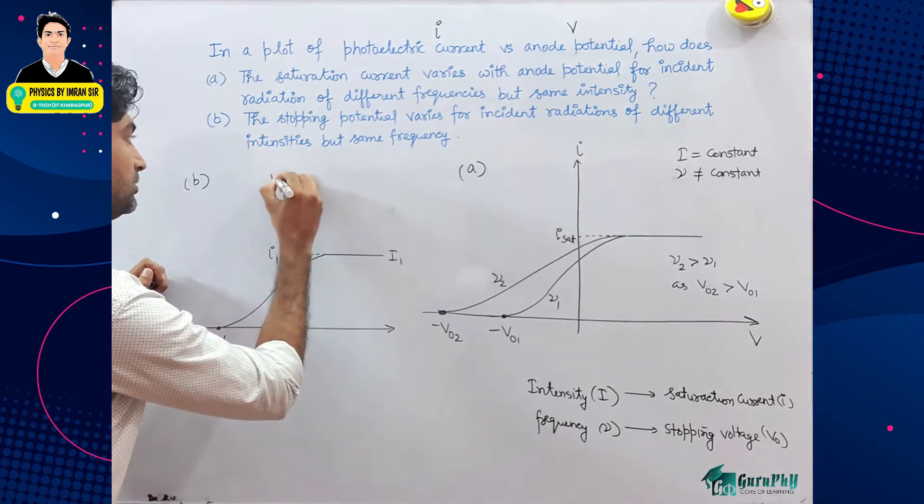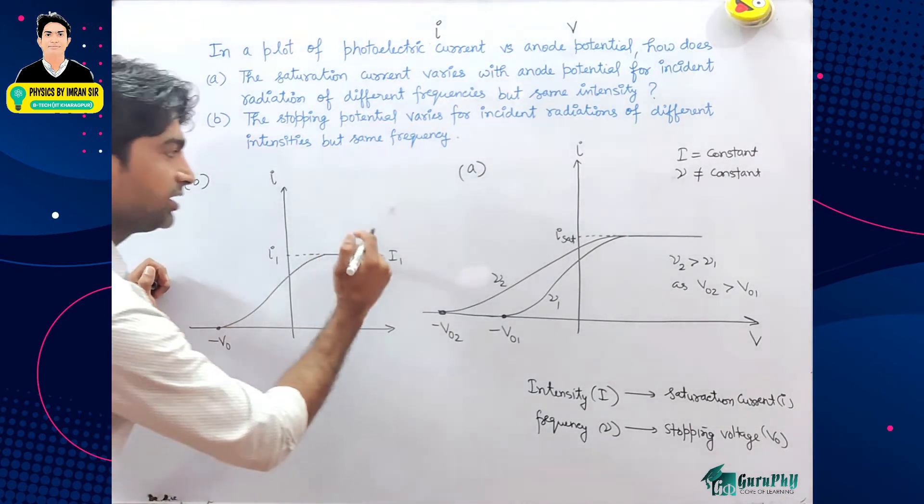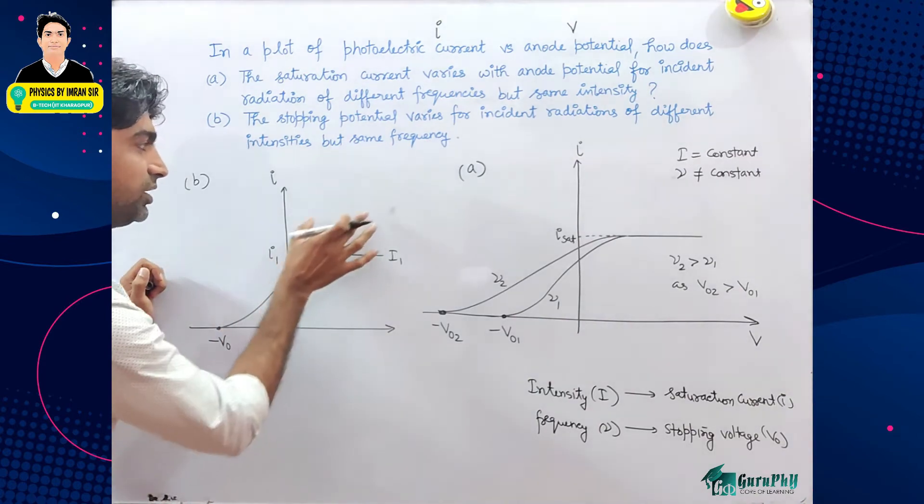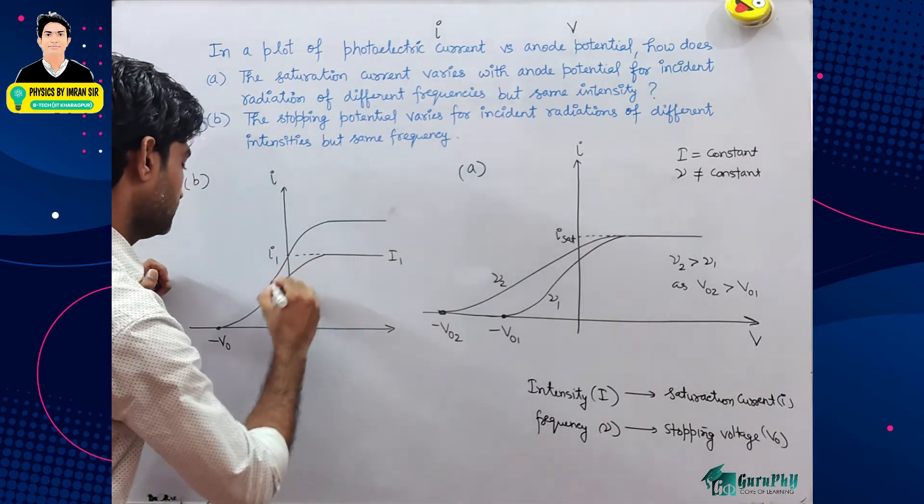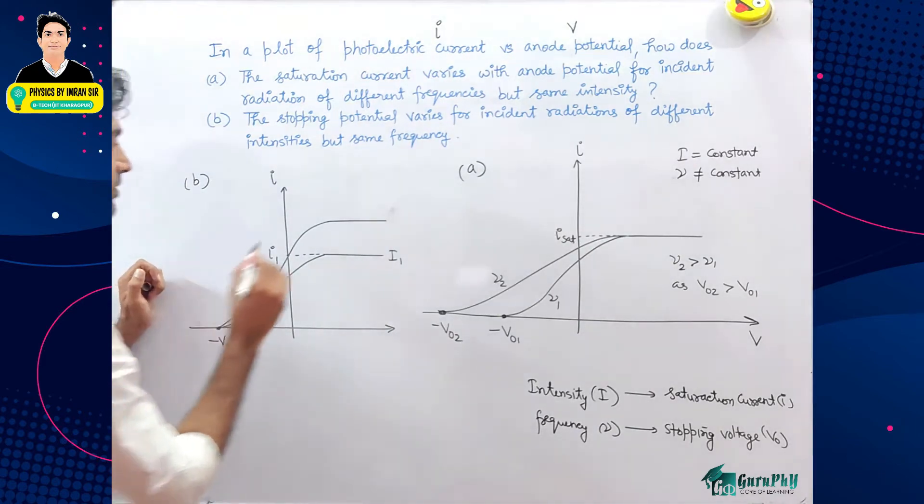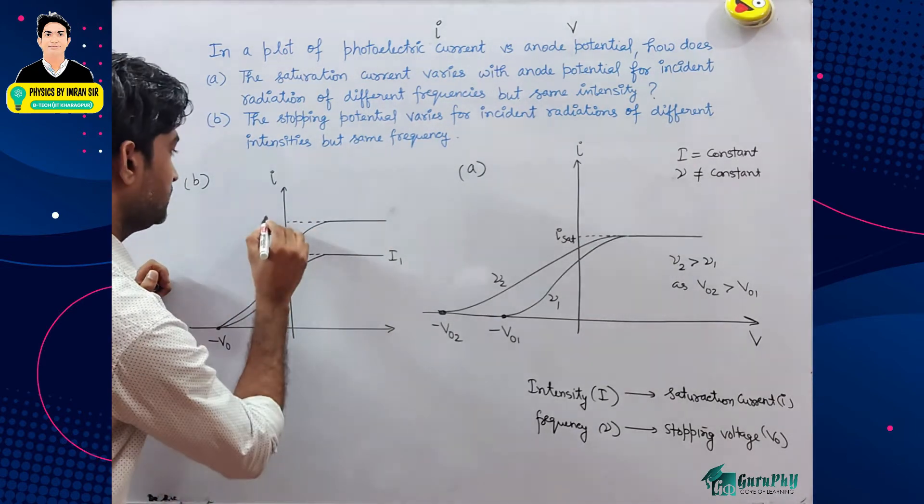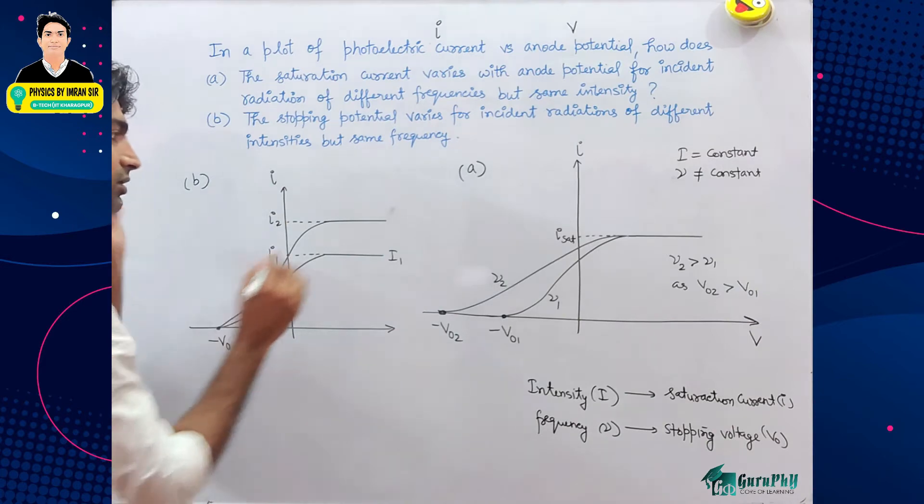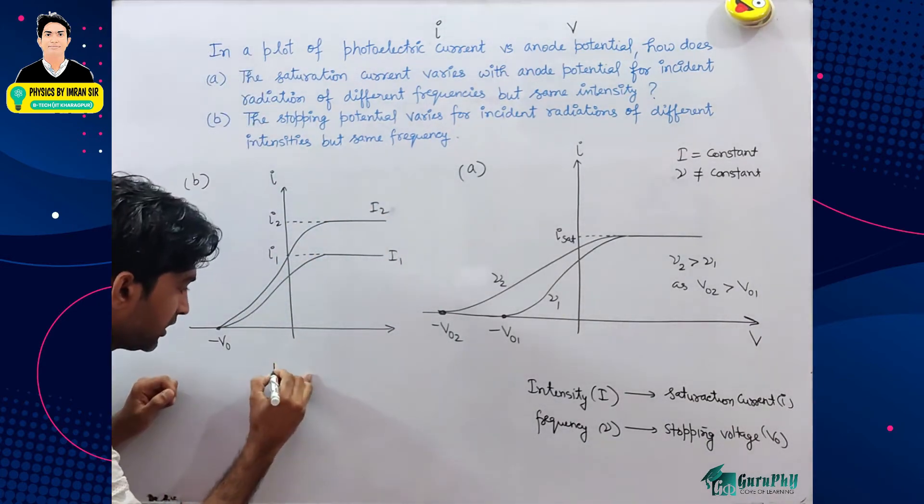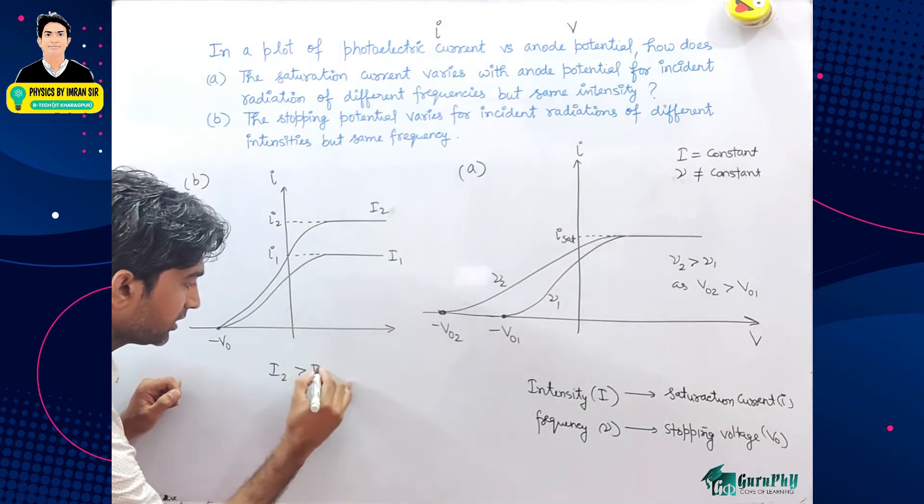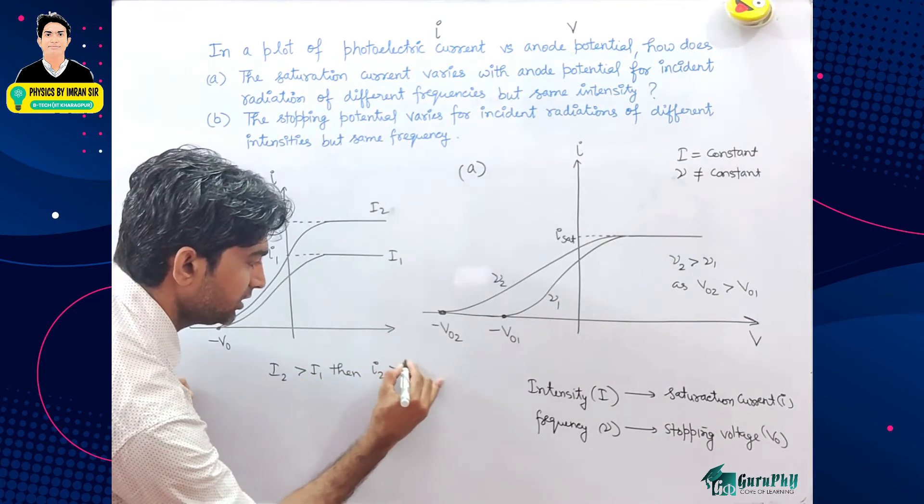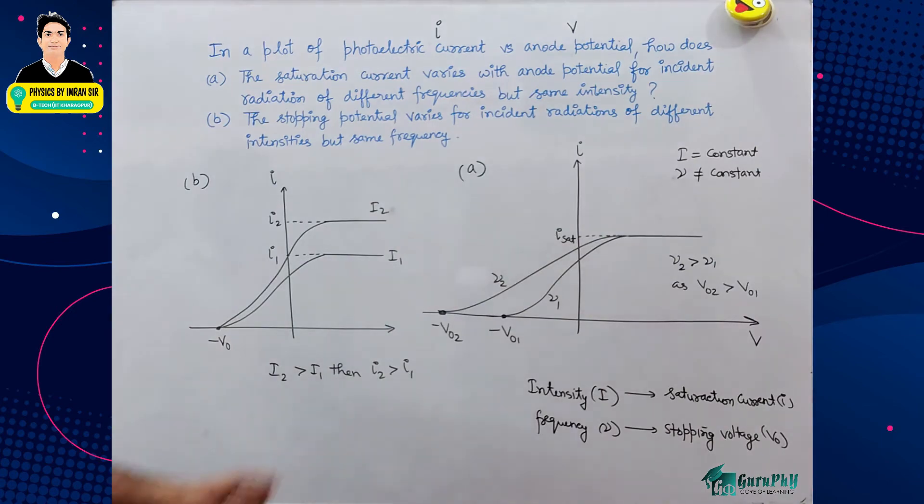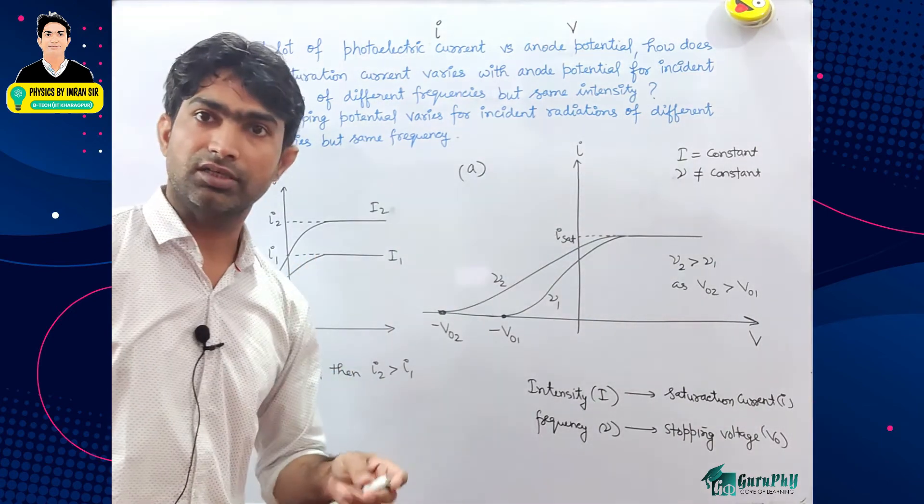Now if intensity increase, then saturation current will increase. So graph is applied to the graph. So i2 greater than i1, then saturation photo current will also be greater than initial saturation current - initial saturation current se final saturation current.